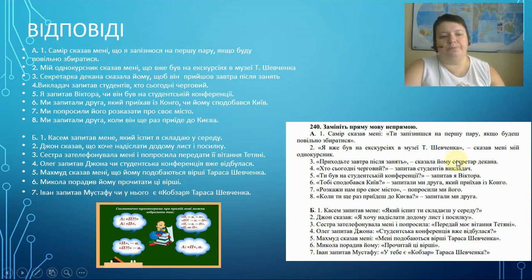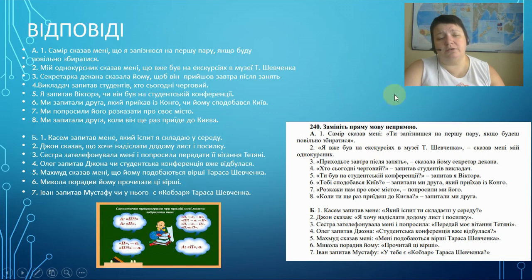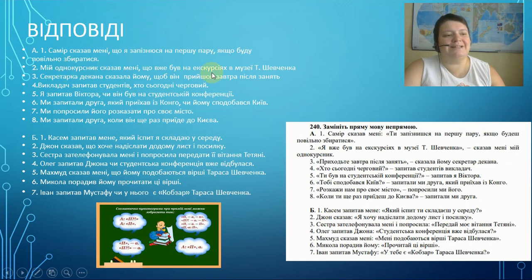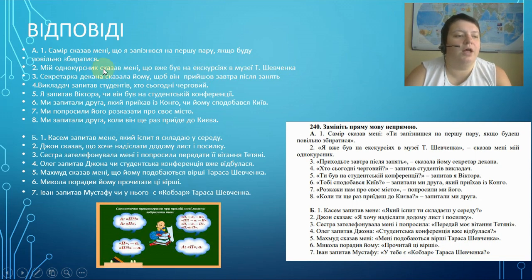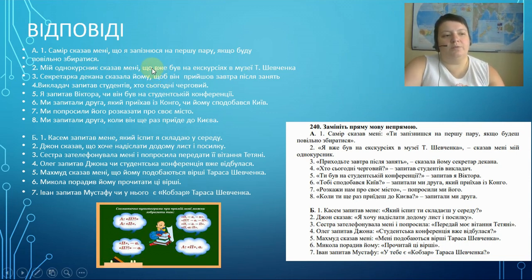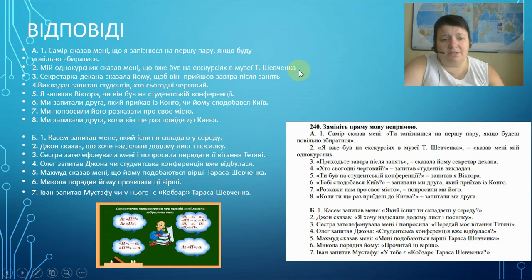Number two — direct speech: 'Я вже був на екскурсії в музеї Тараса Шевченка,' — сказав мені мій однокурсник. 'I have already been on the excursion in the museum of Taras Shevchenko,' my groupmate told me. Indirect: Мій однокурсник сказав мені, що вже був на екскурсії в музеї Тараса Шевченка. We don't change anything at all — just ЩО and everything is the same. We can add він or drop the pronoun. And we don't change any tenses here.